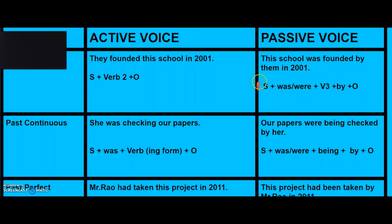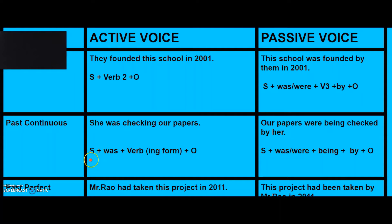For past continuous tense, take the example: 'She was checking our papers.' The structure is: subject plus was/were plus verb plus -ing form plus object. This is the sentence structure of past continuous tense.